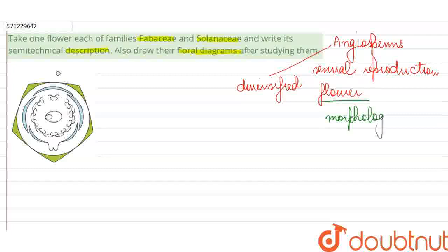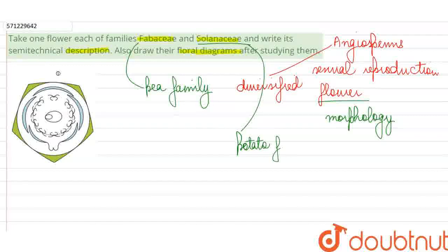We have been given these two families which are very well known. Fabaceae is also known as the pea family or the leguminous plants, all the pulses are found in this family. Whereas Solanaceae is our potato family. Many economically important crops and even medicinal and ornamental plants are found in it.